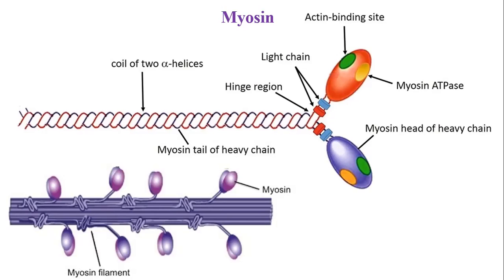The heavy myosin head is approximately 150 to 250 Ångströms in length and 40 Ångströms in diameter, with a molecular weight of approximately 350,000. It consists of two polypeptide chains of much longer length. The tail region — light meromyosin — is approximately 1500 Ångströms long and 20 to 50 Ångströms in diameter with a molecular weight of 150,000. It consists of two polypeptide chains wound around each other as coils of two alpha-helical chains.